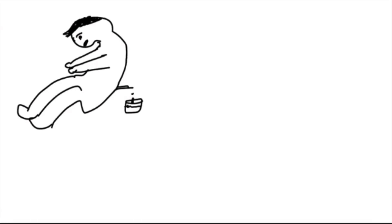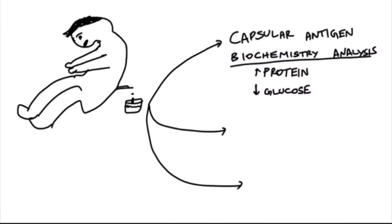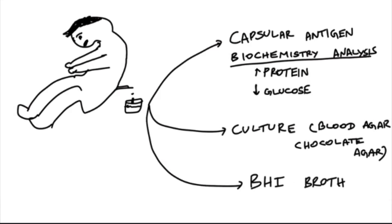For diagnosis, we have to do lumbar puncture and take the CSF of the patient with sterile precautions. We do various tests like capsular antigen detection and biochemical analysis, in which we'll find elevated protein whereas decreased glucose levels. When we culture this CSF on blood agar and chocolate agar, we can identify this bacteria. We can grow this on BHI broth, which is brain heart infusion broth. During lumbar puncture, we'll find elevation or raised CSF pressure.